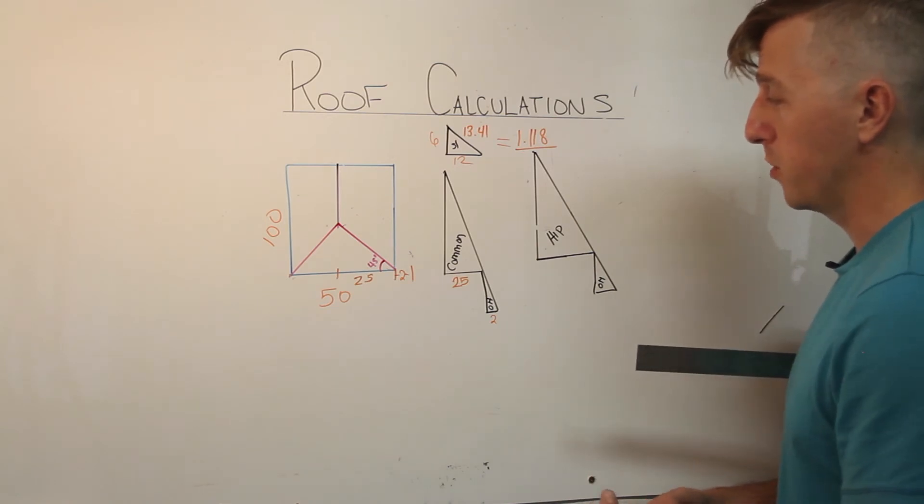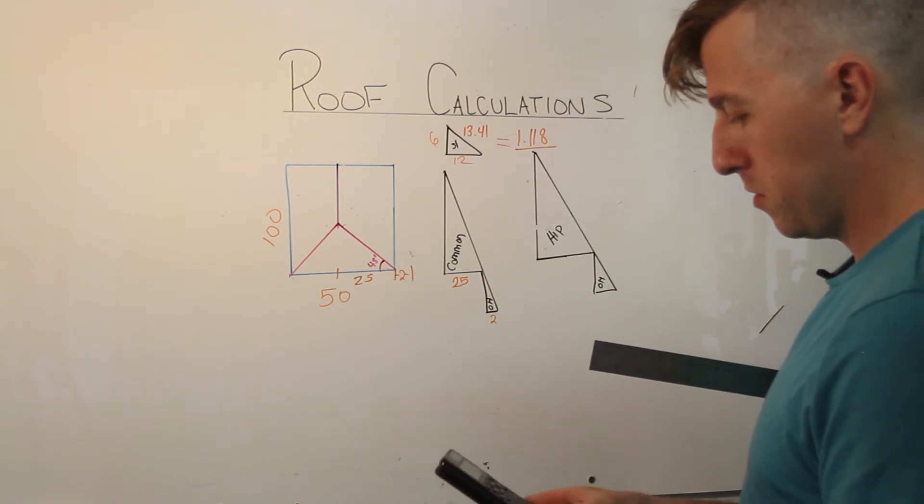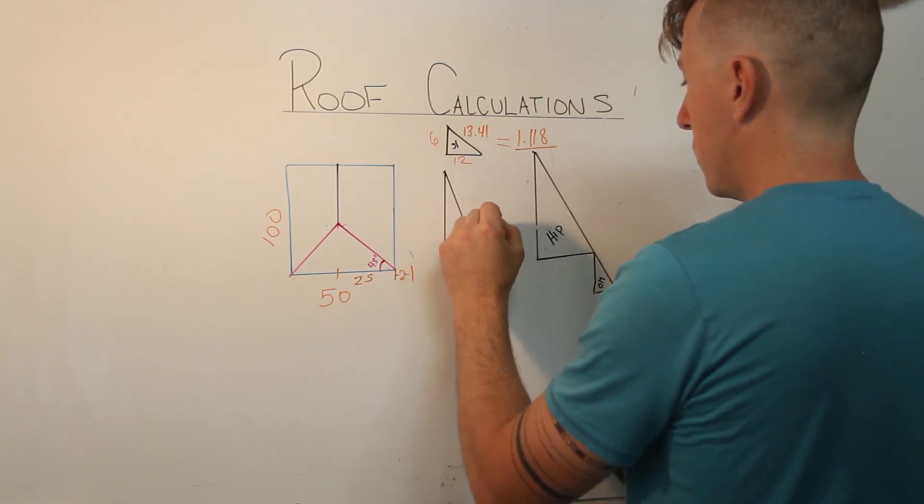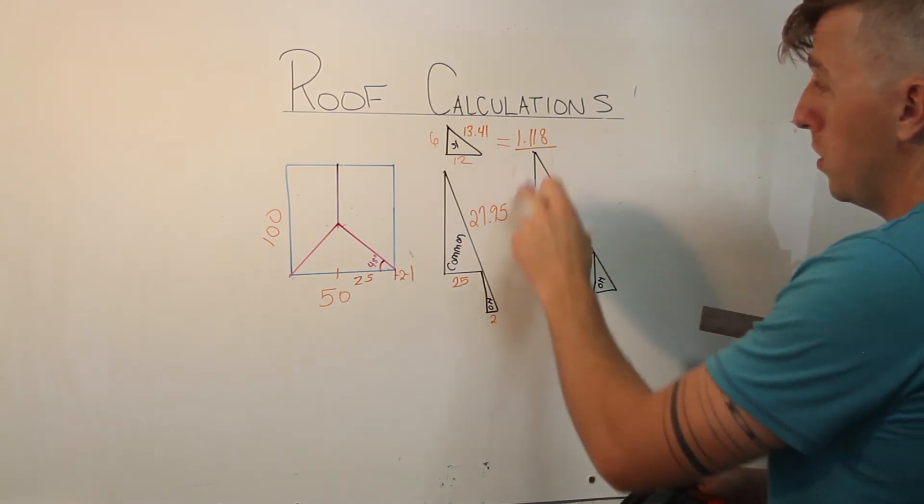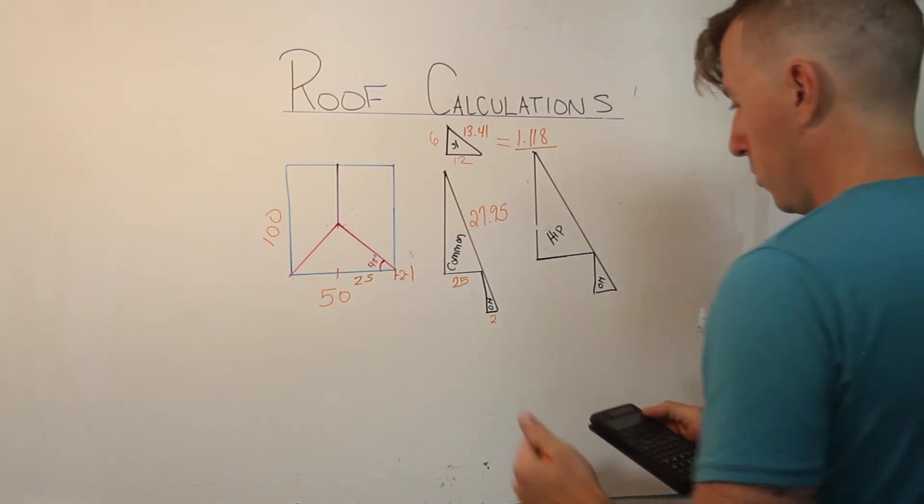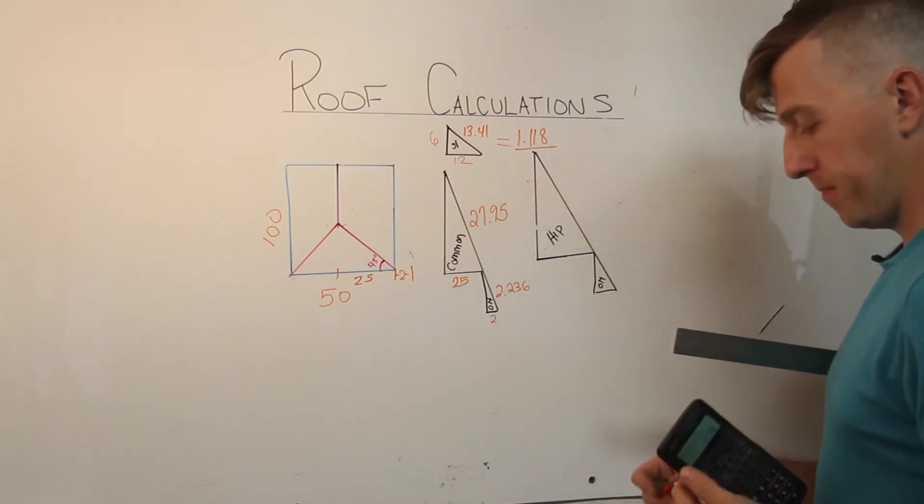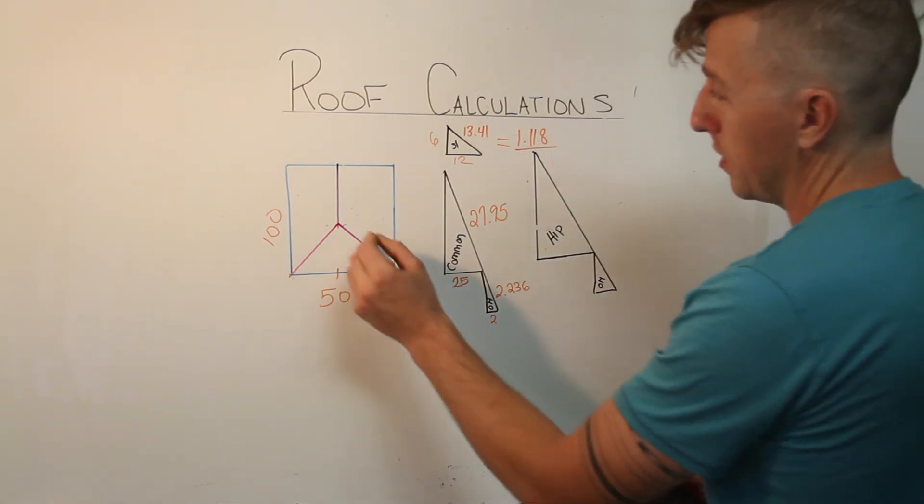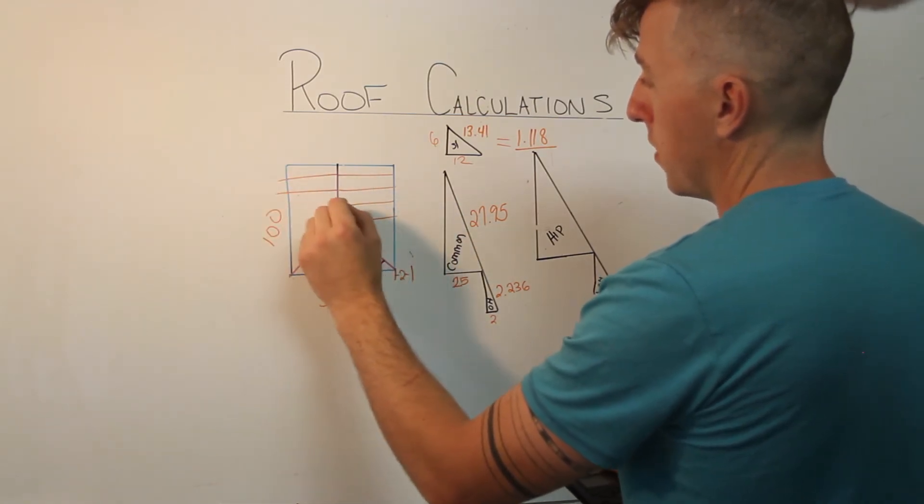So we can solve the common really quickly. 25 times 1.118 is 27.95. 2 times 1.118 is 2.236. So I've already solved the common rafters. And they're all going to be basically landing in here. This is where the common rafters land.